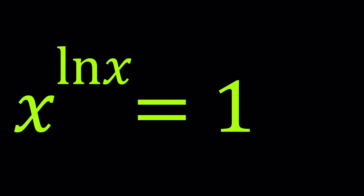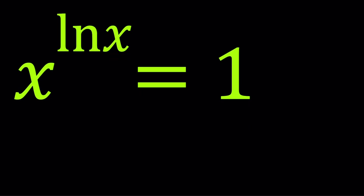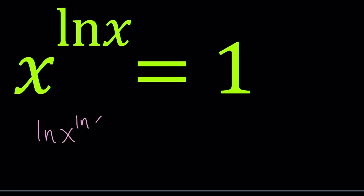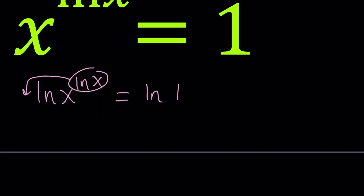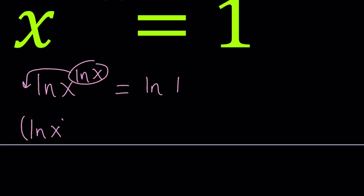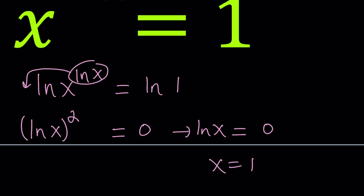When you have an equation like this, ln x is in the exponent and the base is a variable. So let's simplify this by logging both sides — natural log would be a good choice. You can move the ln x to the front and get ln x multiplied by itself, which is (ln x)². And ln 1 equals 0, so we get ln x equals 0, which implies x equals 1. So x equals 1 is the real solution.